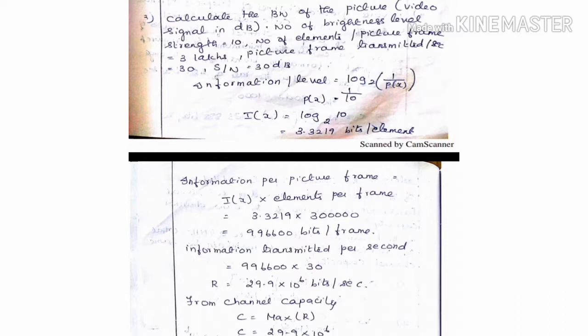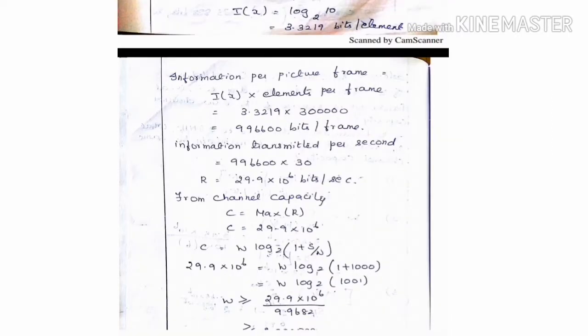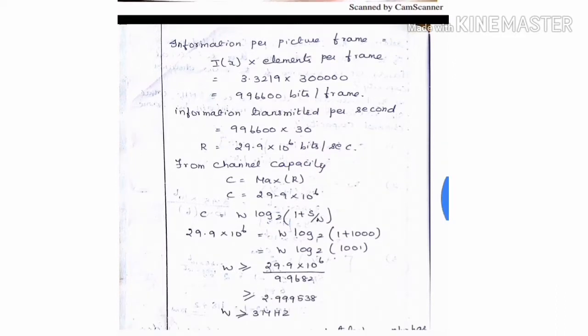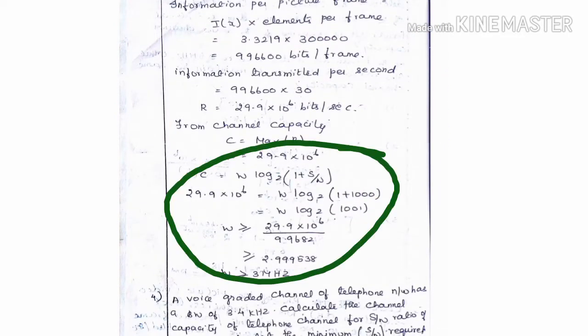Information transmitted per second equals information per picture frame into 30 picture frames per second, which is equal to 29.9 into 10 to the power 6 bits per second. Channel capacity maximum equals 29.9 into 10 to the power 6 bits per second. Therefore W is equal to channel capacity divided by log to the base 2 of 1 plus S by N.